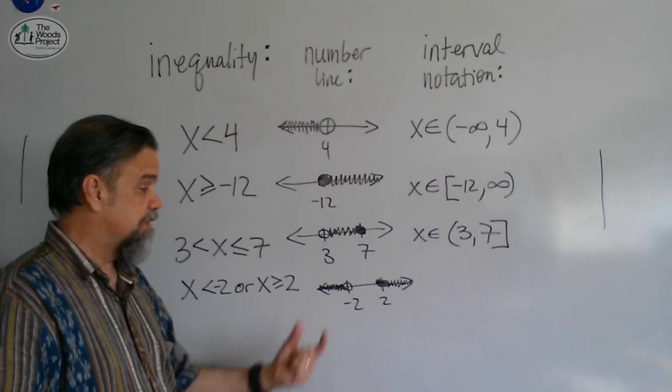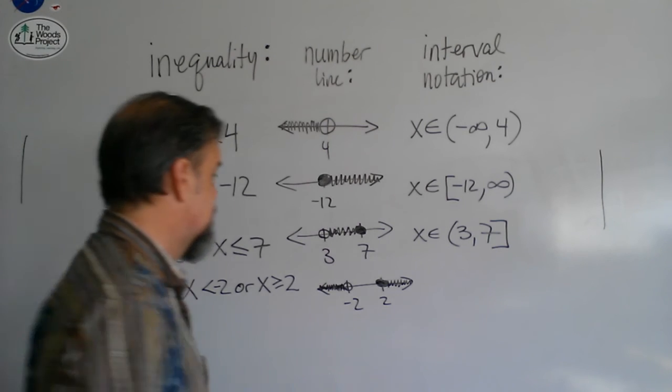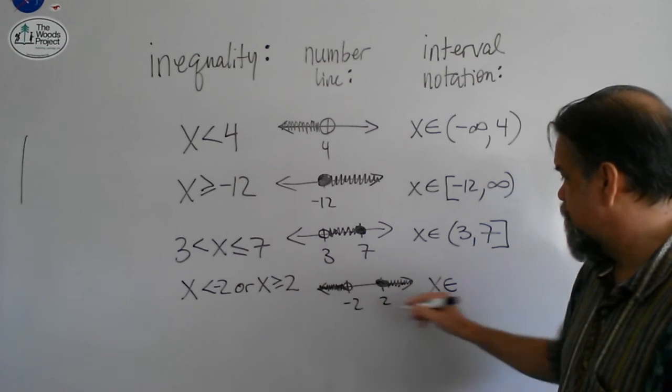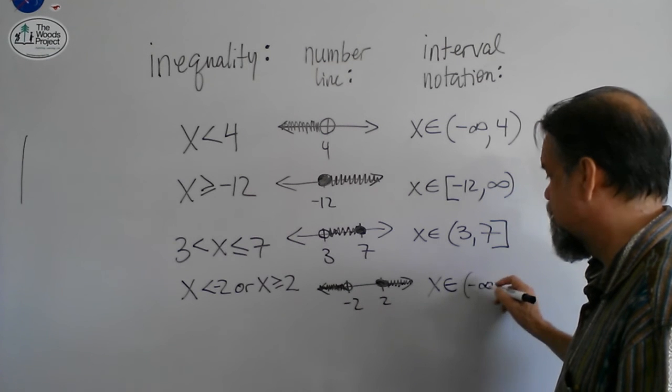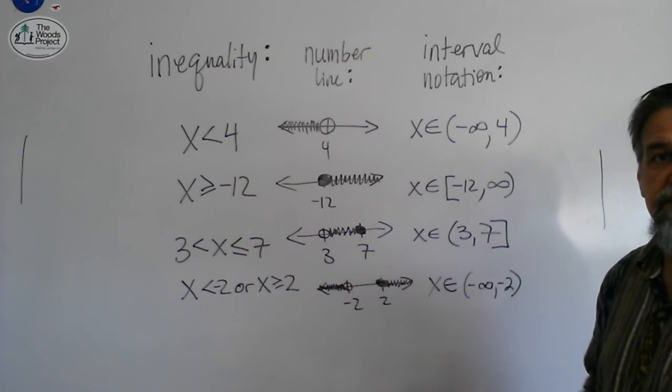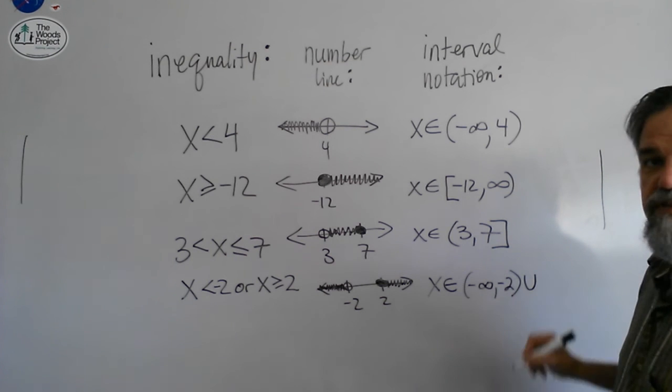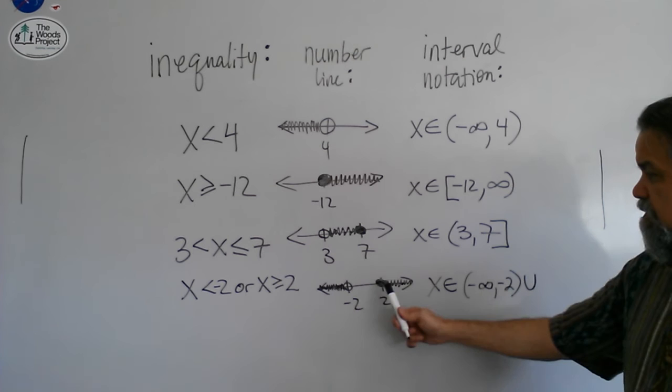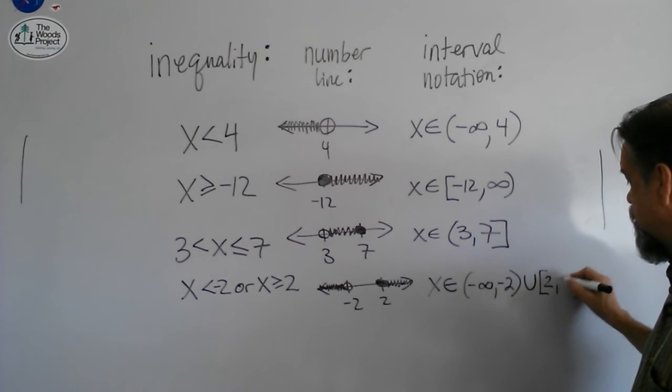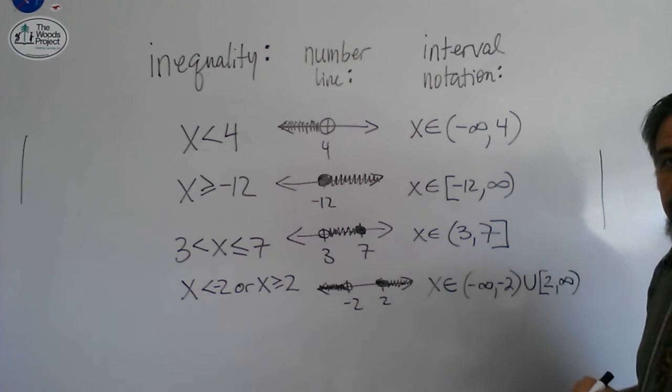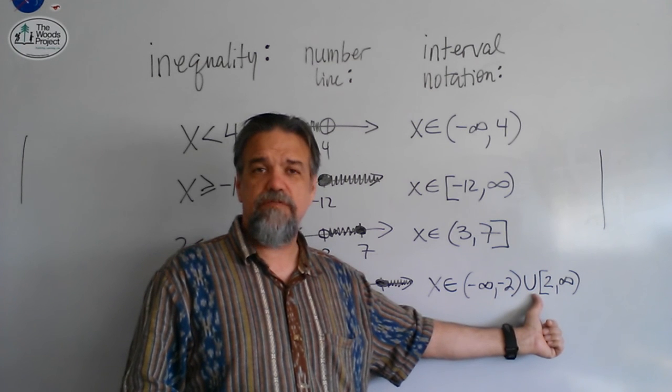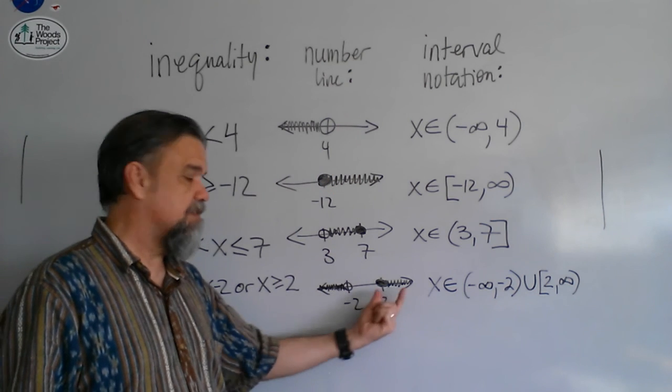That means for interval notation, we're going to have to have two separate intervals that we'll be joining. So I'm going to say x is in the interval from negative infinity, then I get up to negative 2, and I'm going to put a parenthesis there because it doesn't include it. Then I'm going to write or, which you write with a U. U stands for or. And then 2 with a bracket, because it's included in my set, all the way up to infinity. This U actually doesn't stand for or. It stands for union, meaning it's the union of this and this together.